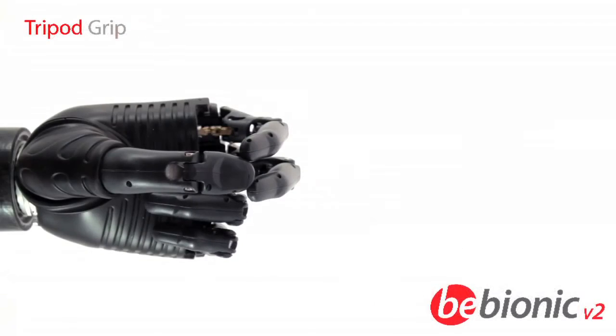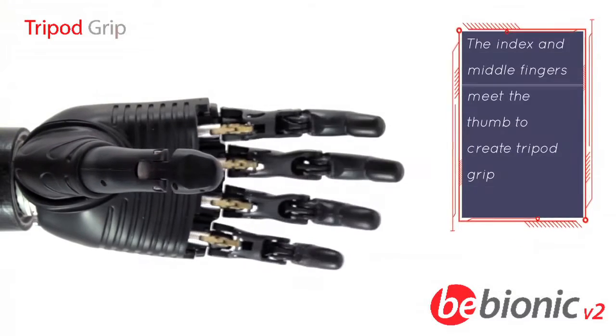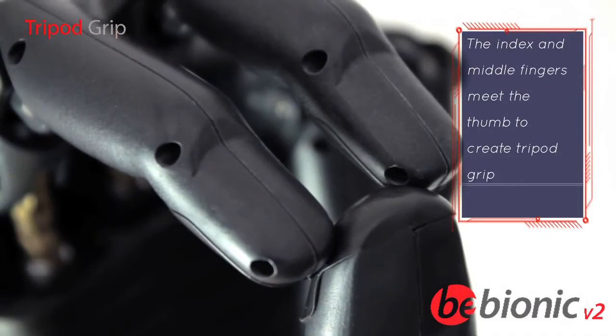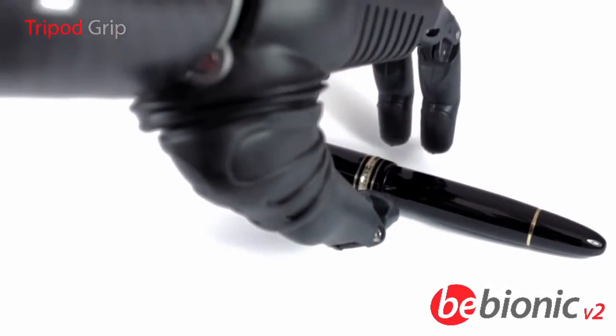In tripod grip, or three-jaw chuck, the index and middle fingers meet the thumb to pick up a variety of everyday objects.